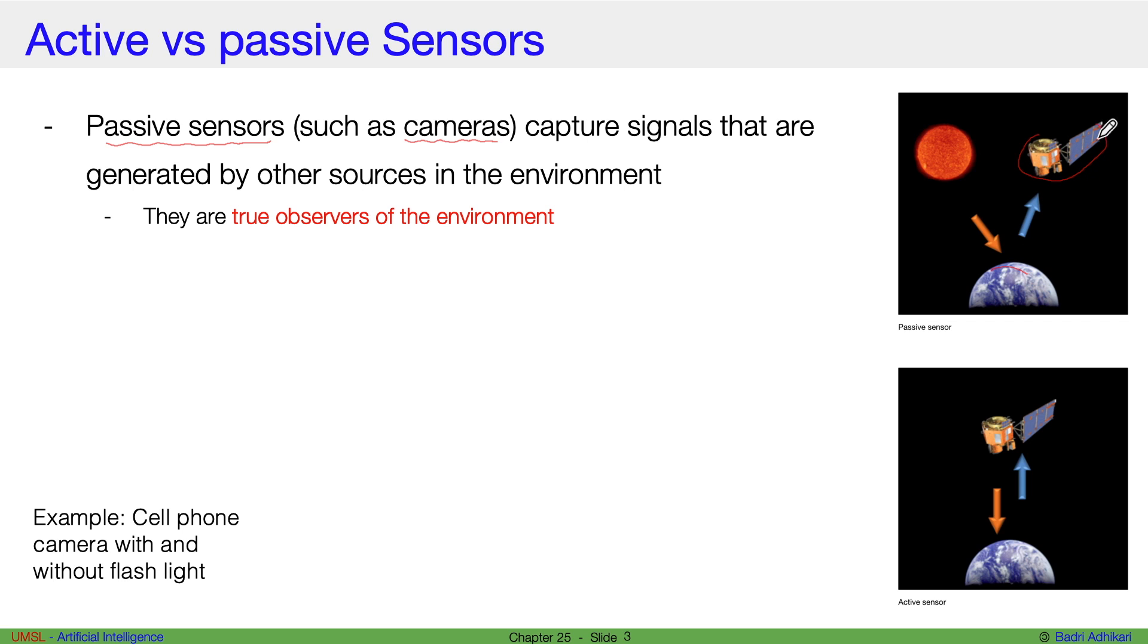Say you have a camera or a device that simply captures the signals in the environment, which may be from the sun or something else in the environment, but the sensor itself is not releasing anything or producing anything. So such sensors are passive sensors and they are the true observers of the environment because they don't mess with the environment. They simply read from the environment.